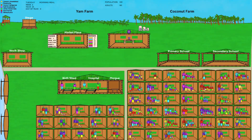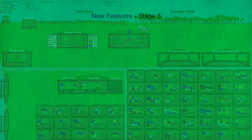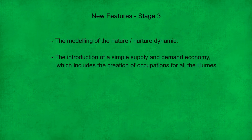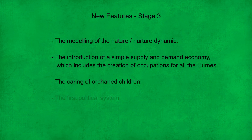Welcome to stage 3 of the computer simulation project. Stage 3 introduces some key new features to the simulation. These features include the modeling of the Nature-Nurture dynamic, the introduction of a simple supply and demand economy, which includes the creation of occupations for all the humans, the caring of orphan children, and the first political system.